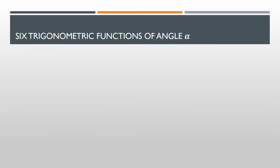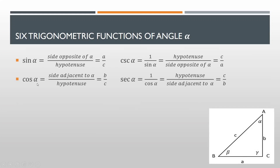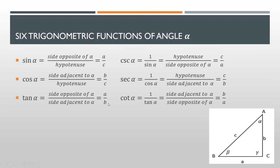These are the six trigonometric functions of angle alpha. Sine alpha is equal to side opposite alpha over hypotenuse, so that is a over c, and for cosecant, that will be c over a. For cosine alpha, that is side adjacent to alpha, which is side b, over hypotenuse, which is c. So for cosine it's b over c, and for secant it's c over b. For tangent of alpha, it's the side opposite of alpha over side adjacent to alpha, so that is a over b, and for cotangent, that is b over a.